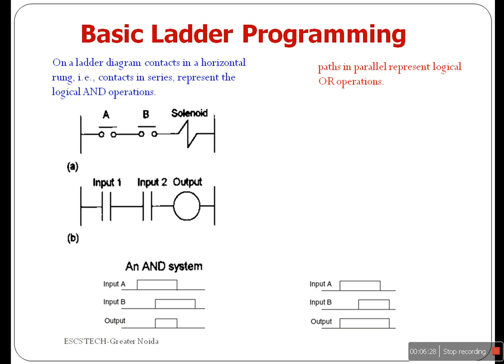Power only flows through a normally open contact when the device assigned to the contact is in its ON state. Figure A shows the electrical circuit and Figure B shows its ladder logic equivalent. Switch A and Switch B must both be closed to energize the output or solenoid, which gives an AND logic situation.